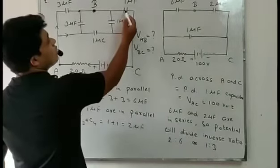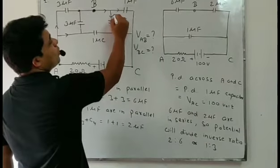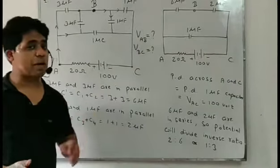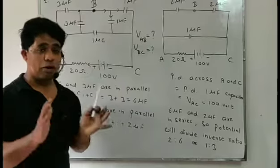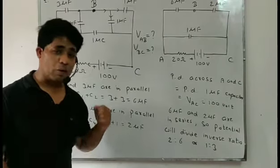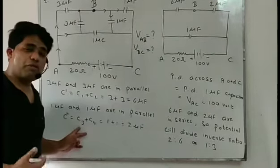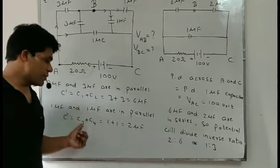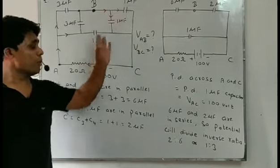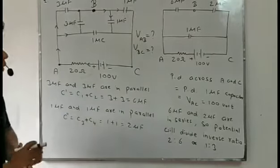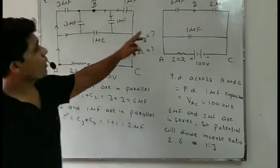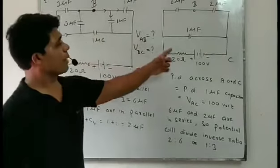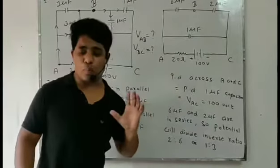Same like this, 1 microfarad and 1 microfarad — the charge can divide into two parts Q1 and Q2, so both have different charge. Same charge means series and different charge means parallel. So 1 microfarad and 1 microfarad will be in parallel combination: C1 plus C2, that is 1 plus 1 = 2 microfarad. So we have 6 microfarad, 2 microfarad, and 1 microfarad with a 100 volt battery and 20 ohm resistance.